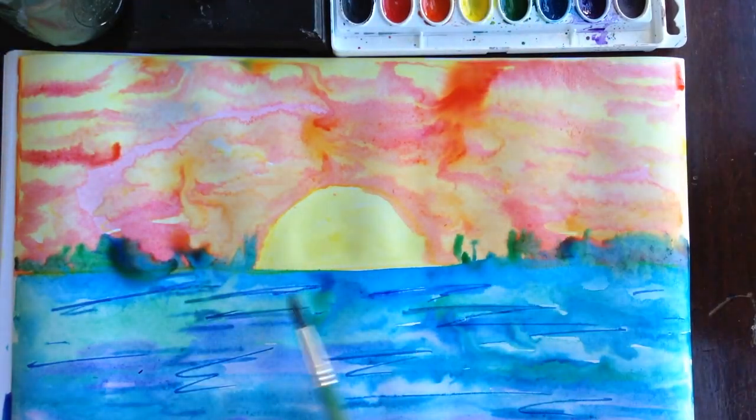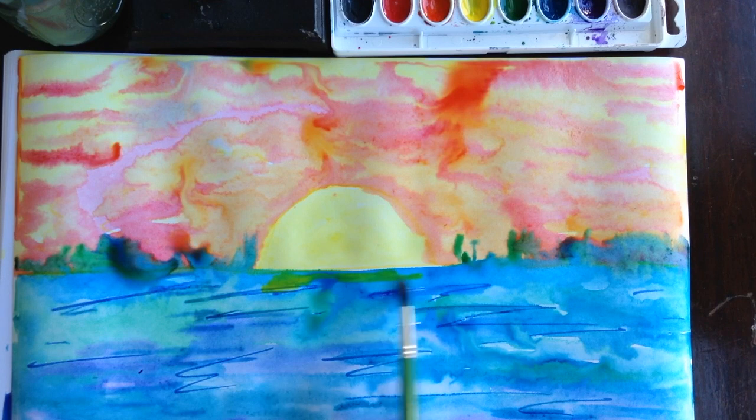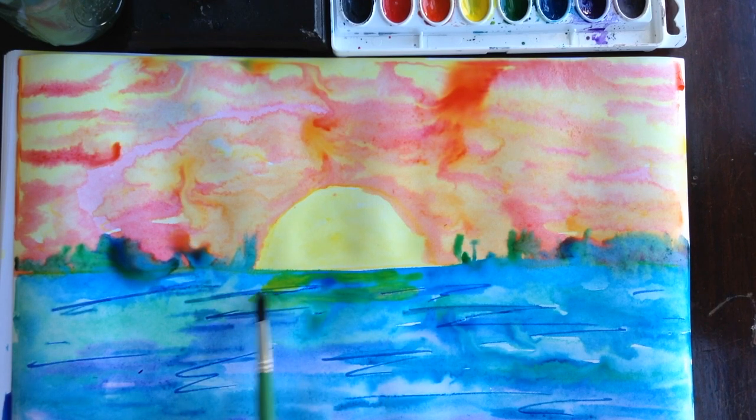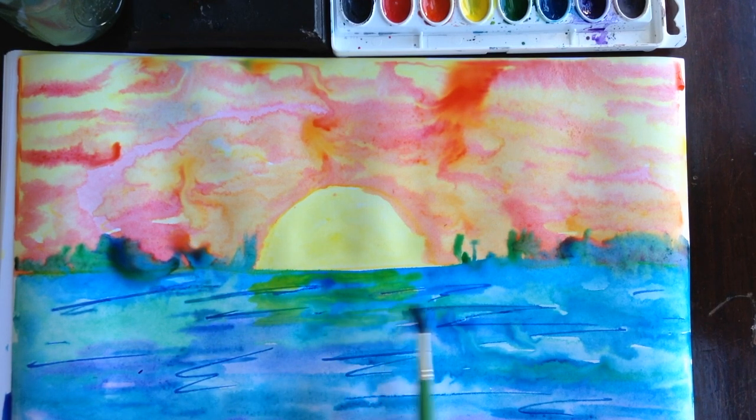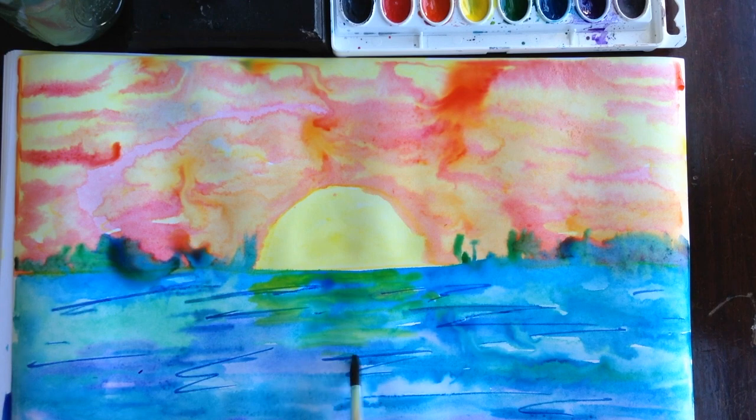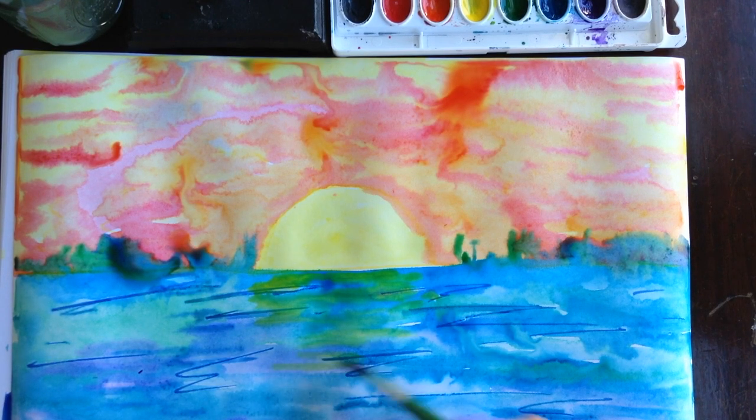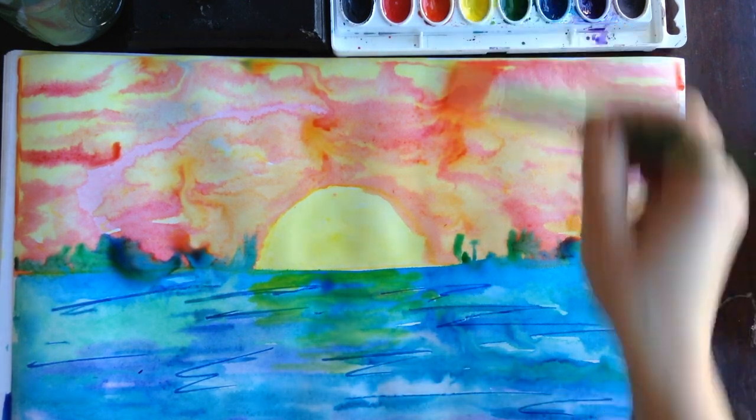If you really want to be fancy, you can try to add a little bit of the reflection of the sun into the water by putting that yellow on top. Make it look like the sun is being reflected right there.